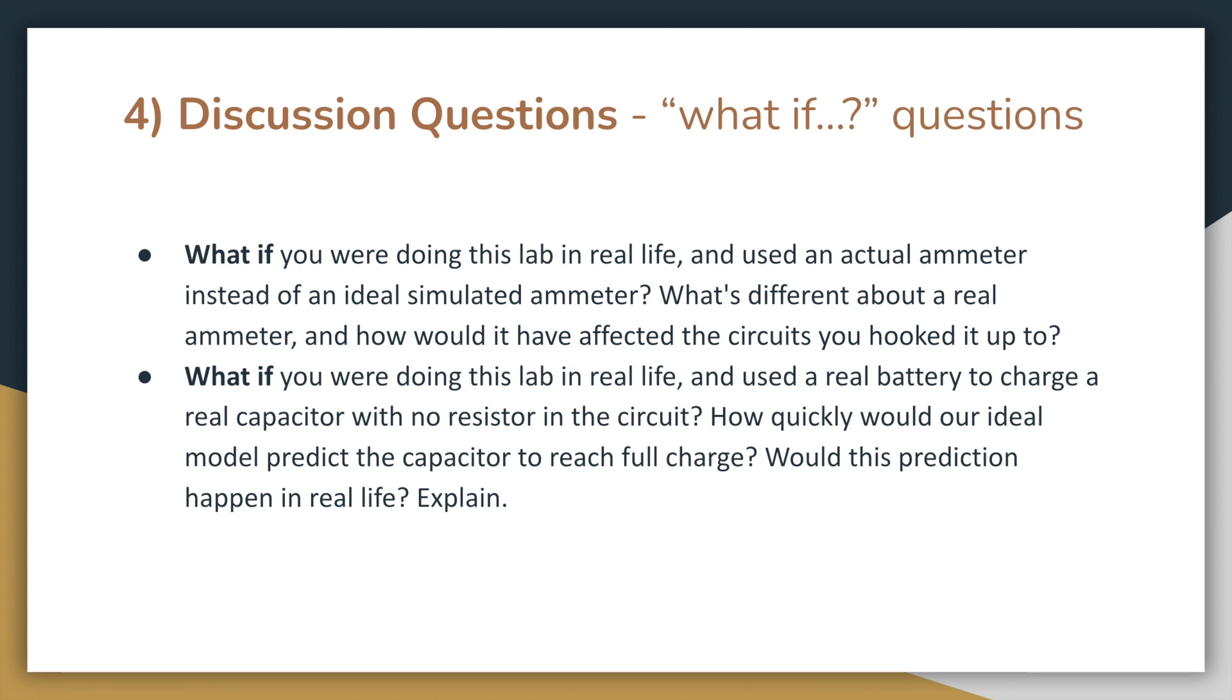Lastly, to answer the what-if questions related to this lab, what if we'd done the lab in real life and used an actual ammeter? And what's different about that, and how might this have affected our results? Well, an ammeter is designed to have very low resistance, so an ideal ammeter has exactly zero resistance. Of course, this is not possible in real life, as all objects have some level of electrical resistance, and even the best ammeters have a very small amount of resistance. Adding resistance to a series circuit decreases the amount of current flowing through it. So had we done this lab in real life, we'd be getting lower than expected current values due to the internal resistance of the ammeter.